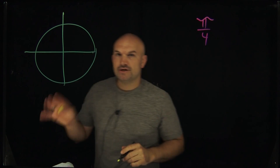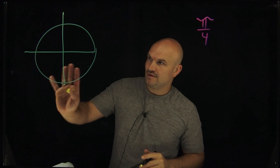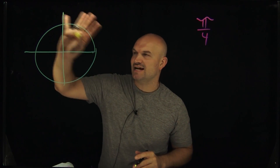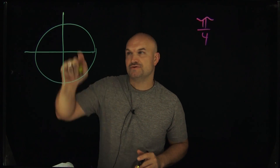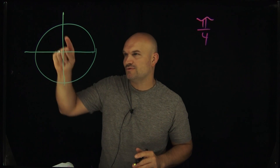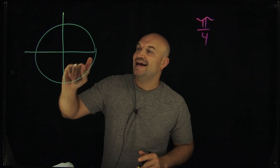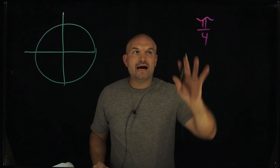So here's the unit circle, and hopefully you recognize that this is kind of like in four quadrants — first quadrant, second quadrant, third quadrant, and fourth quadrant.